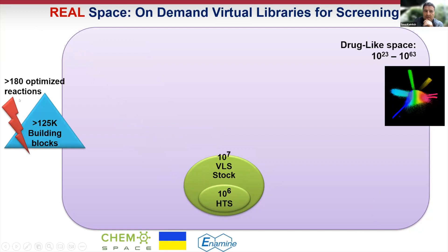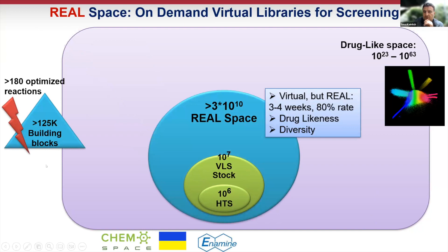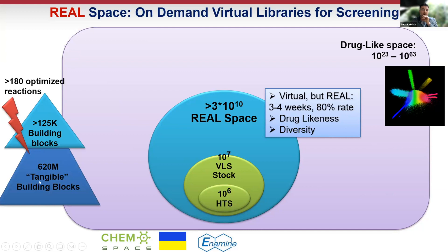Now, how do on-demand libraries change this? REAL space is now about 180 optimized reactions applied to more than 100,000 building blocks, giving rise to currently 30 to 60 billion compounds that are virtual but real in the sense that they can be synthesized in three to four weeks with 80% success rate. The library maintains drug-likeness and diversity.